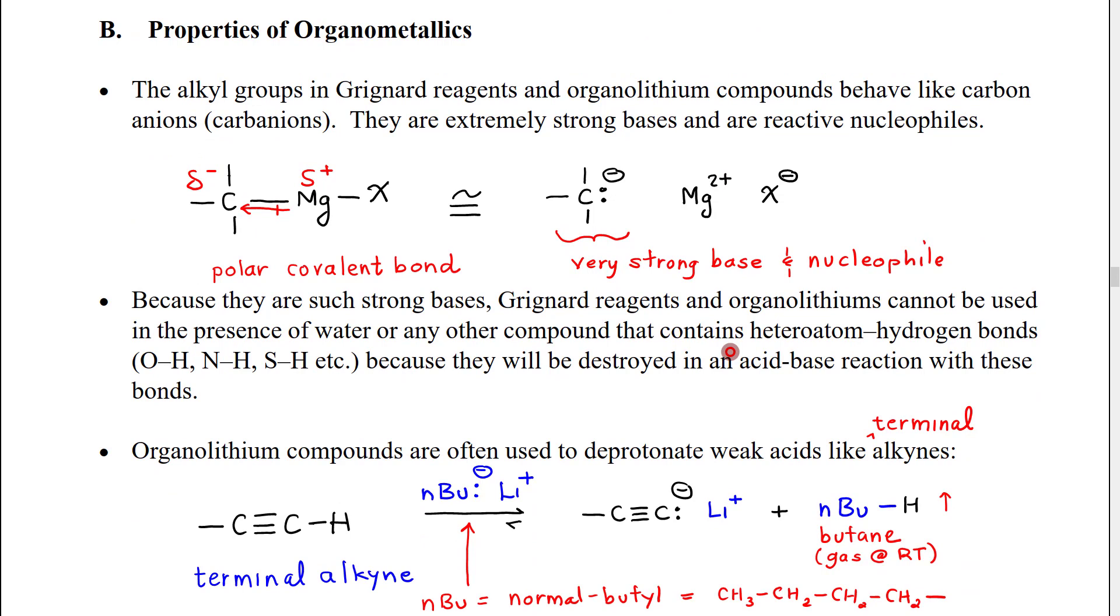We're now going to look at some of the properties of organometallics before we look at how they react to make alcohols. What we see in organometallic compounds is that the carbon groups behave like carbon negative ions, carbanions. Carbanions are extremely strong bases and very reactive nucleophiles. If we look at the organomagnesium molecule, the carbon would have a covalent bond to magnesium. Magnesium has a very low electronegativity, carbon is in the middle, there would be a polarity arrow pointing from the magnesium toward the carbon, meaning that the carbon would have a large partial negative charge, and the magnesium would have a large partial positive charge. We call that a polar covalent bond.